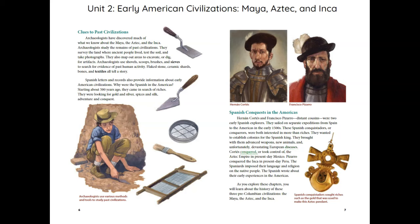Cortés conquered, or took control of, the Aztec Empire in present-day Mexico. Pizarro conquered the Inca in present-day Peru. The Spaniards imposed their language and religion on the native people. The Spanish wrote about their early experiences in the Americas. As you explore these chapters, you will learn about the history of these three pre-Columbian civilizations: the Maya, the Aztec, and the Inca.